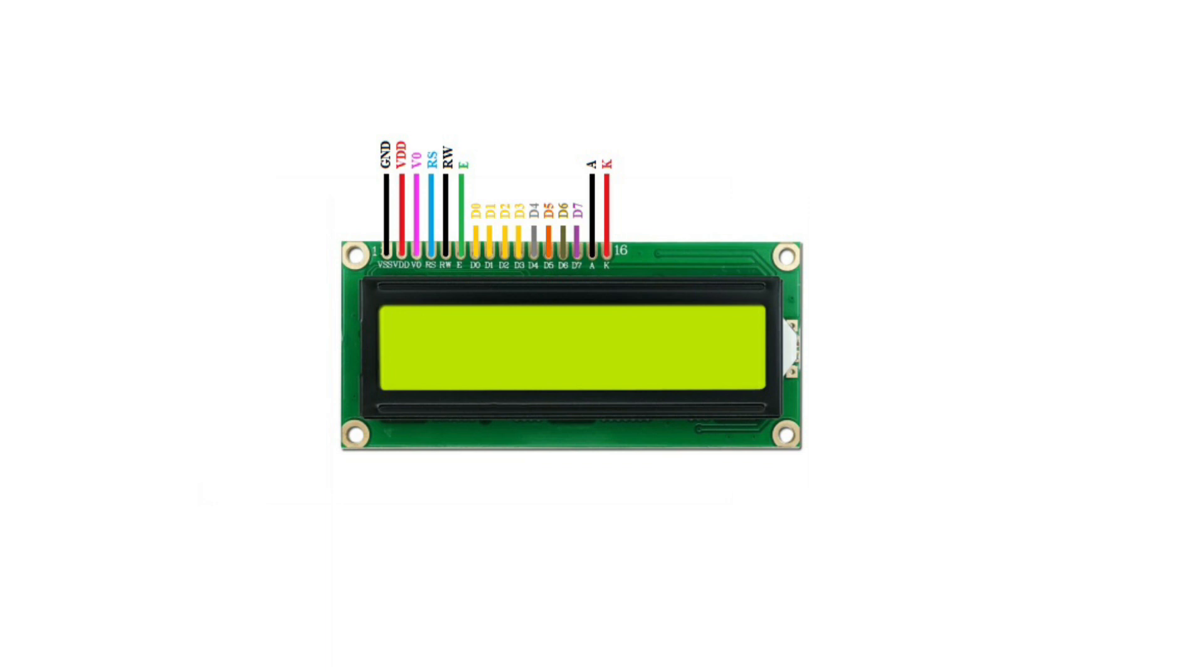Now we discuss about 16x2 LCD display pin configuration. It has 16 pins, first pin is ground and second pin is VDD for positive 5V. Next pin V0 is display contrast control pin.